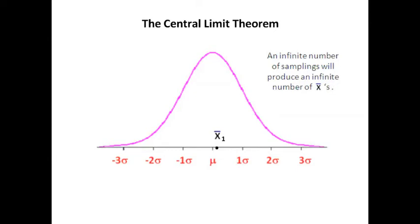What we're saying is that if we take an infinite number of samplings, which will produce an infinite number of x's, then certain things are going to take place. Look at my little x̄₁. All that means is that I took one sampling, and this is the mean of that specific sampling.